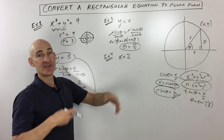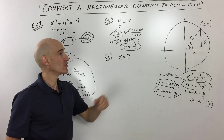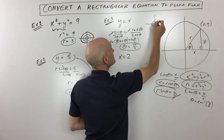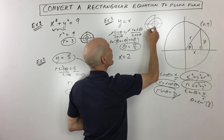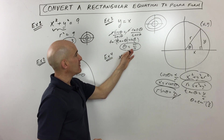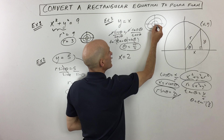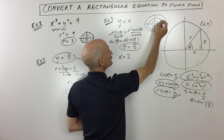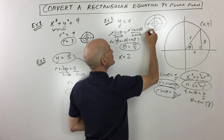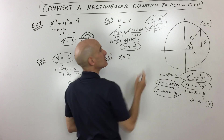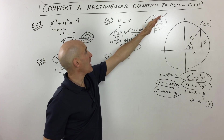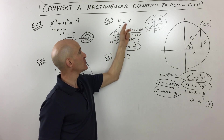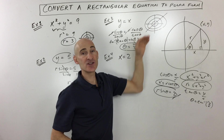In this case, we weren't able to isolate r — we just have the angle theta equals pi over four. No matter what the radius is, whether one, two, or three, the angle remains pi over four. This gives us a line at a 45-degree angle, which is the same as y equals x in rectangular form. These are just two different ways of writing the equation for that same line.